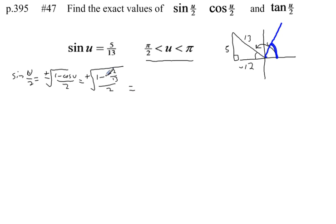Let's continue. So I have 1 minus negative 12 over 13. That's going to be like 1 plus 12 thirteenths. And that 1, let's think of it as 13 over 13. So that's going to give me 13 plus 12 all over 13 all over 2, which I can write as 25 over 13 all over 2.